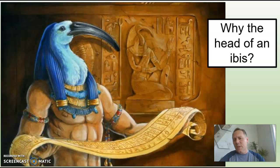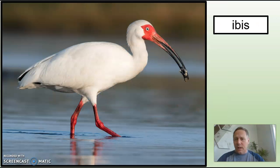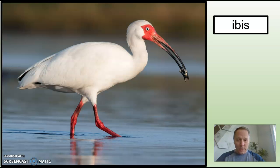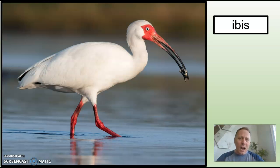So why is Thoth depicted with the head of an ibis? An ibis is a water bird that would return to the River Nile each year. It didn't matter if the floods came early or the floods came late in the year — the ibis always knew somehow when to return, and the ancient Egyptians could never figure out how this bird was so smart and knew when to return to the flooded Nile. Hence, the god of science.